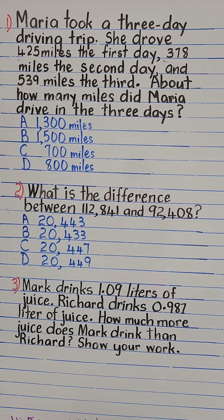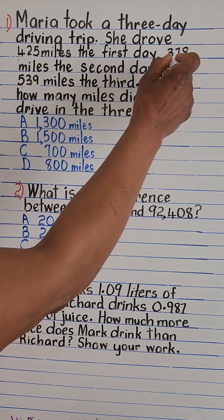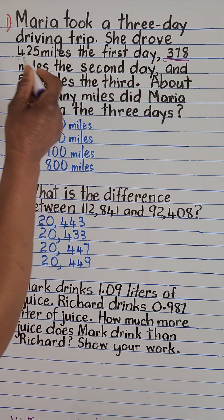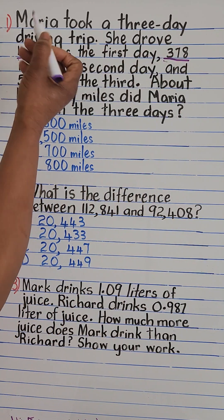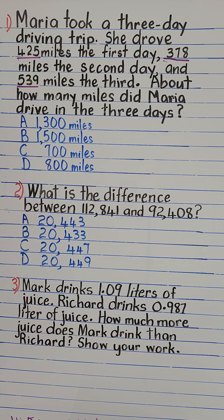So first we're going to read our problem: Maria took a three-day driving trip. She drove 425 miles the first day, 378 miles the second day, and 539 miles the third day. About how many miles did Maria drive in the three days? So the information we need to solve the problem: